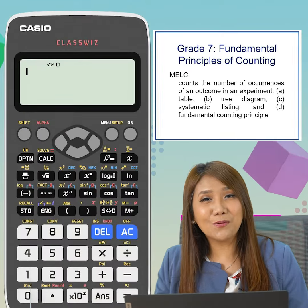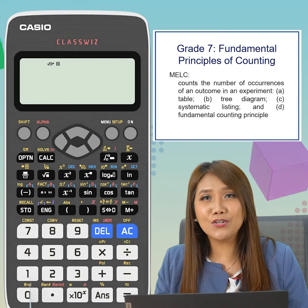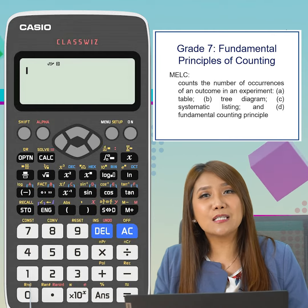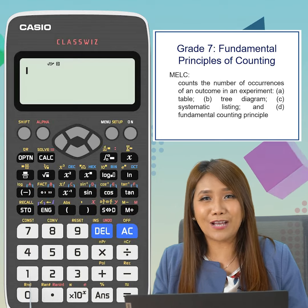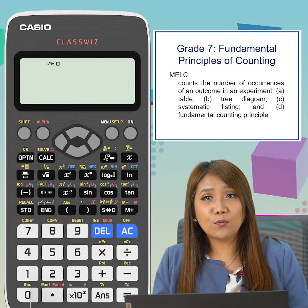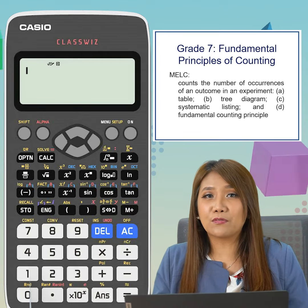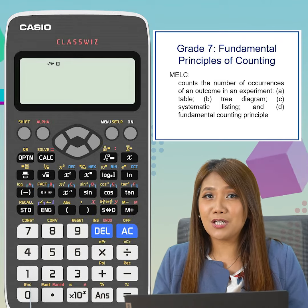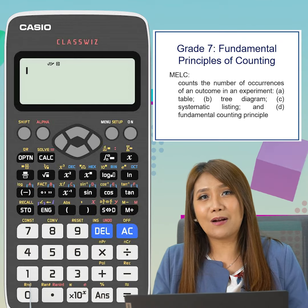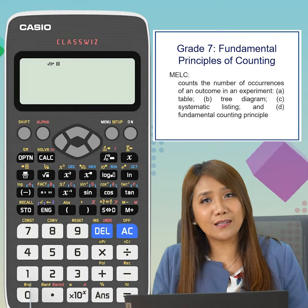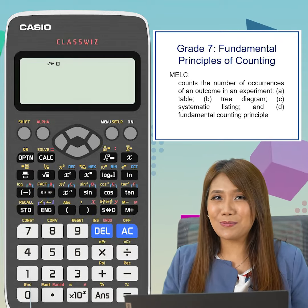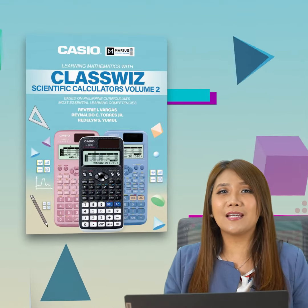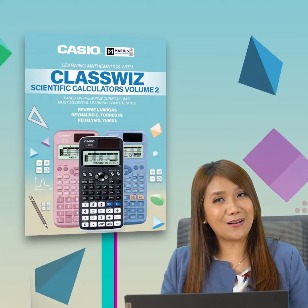Hi guys! For this video, we will explore a feature of Casio ClassWiz Calculator that is specially applicable in solving problems involving fundamental principles of counting. Usually, to solve problems involving fundamental principles of counting, we do manual computation. In this video, we will see how Casio ClassWiz can innovate the way we do things in statistics. Great news because this lesson can be found in our Casio book on the topic, Fundamental Principles of Counting.